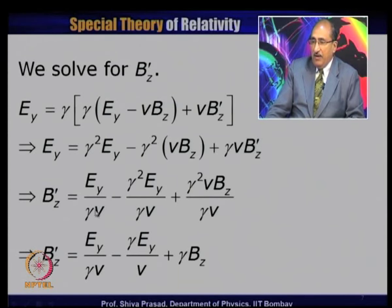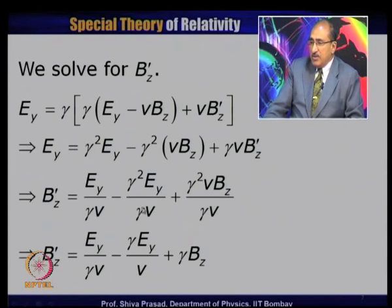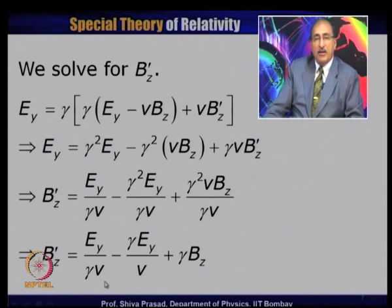Bz' = Ey/(gamma·V) − gamma²·Ey/(gamma·V) + gamma²·V·Bz/(gamma·V). Simplifying: gamma² over gamma cancels to gamma, V over V cancels to 1. The third term becomes gamma·Bz. Taking Ey common from the first two terms: Bz' = Ey·(1/(gamma·V) − gamma/V) + gamma·Bz.